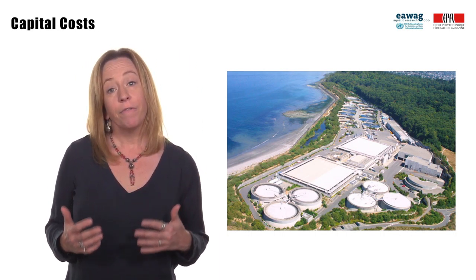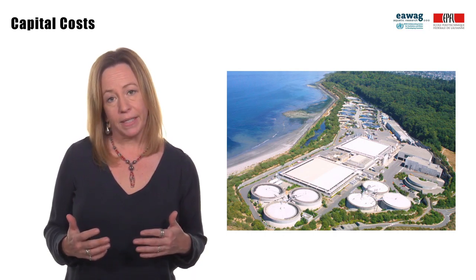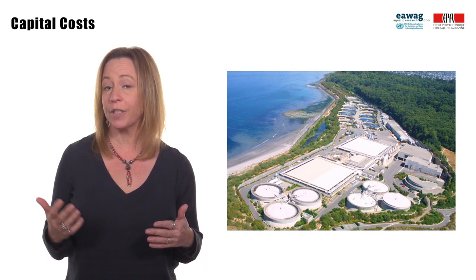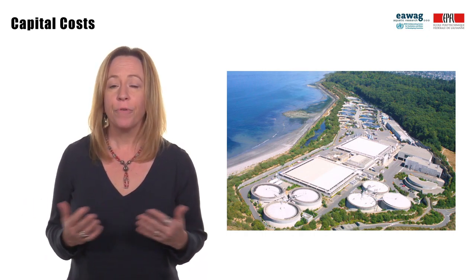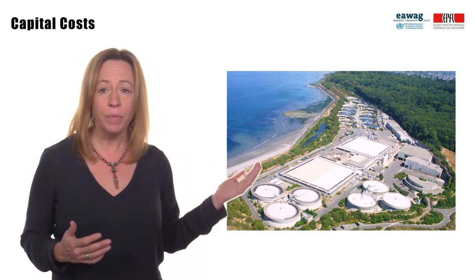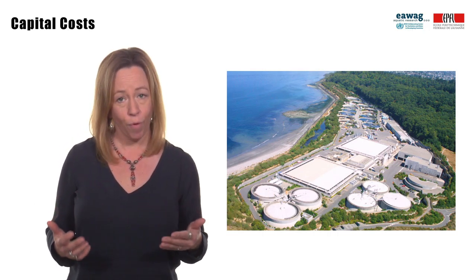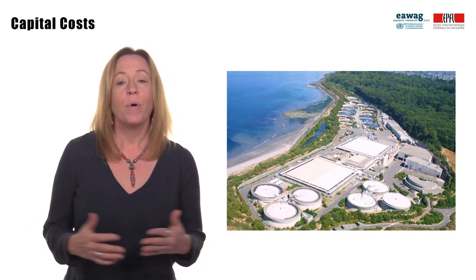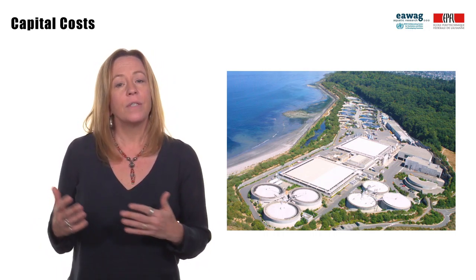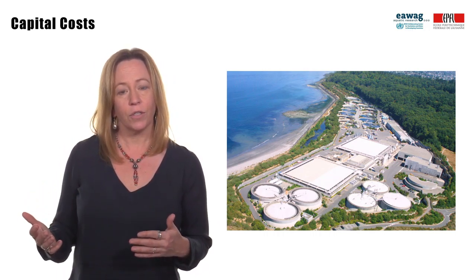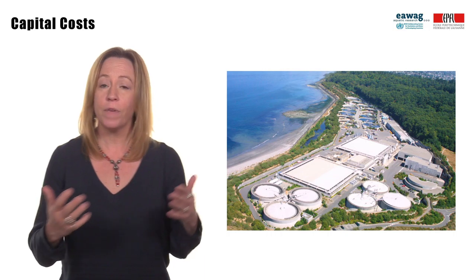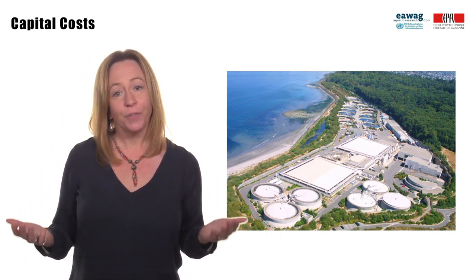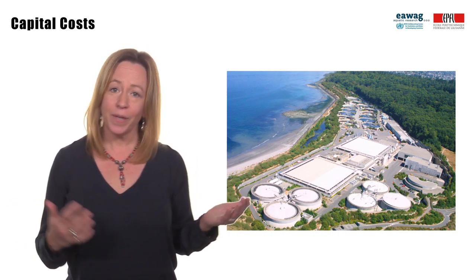Capital costs are fixed, one-time expenses incurred on the purchase of land, buildings, construction, and equipment used. For example, if you wanted to build a treatment plant, it would include the cost of the property and the construction of the entire facility. But with sanitation, it also includes the infrastructure to get wastewater or fecal sludge to the treatment plant, because there's no point in having a treatment plant without a way to get the wastewater there.